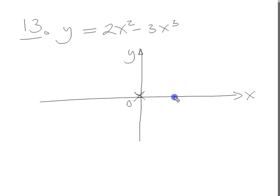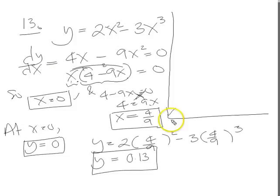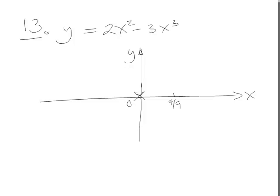So there we are. There's our thing. And we don't know whether it's max or min. And the other one was 4 ninths. So I'll mark it here. And what was the value? 0.13. So the output was 0.13 at 4 ninths. So let's go back. 0.13 at 4 ninths. So it's there. And we don't know if it's a min or a max.